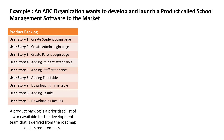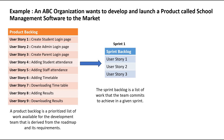As we know, in the scrum framework, the development of the product happens in multiple iterations or in multiple sprints. Here, in our example, based on the priority of the requirement and the capacity of the team, the development team agrees to work on the first 3 user stories in Sprint 1, and these 3 stories form a Sprint Backlog for Sprint 1. To define, the Sprint Backlog is a list of work that the team commits to achieve in a given sprint.